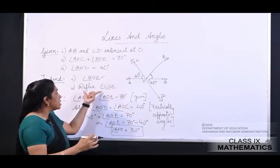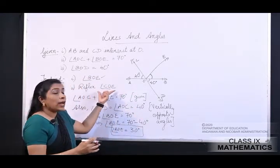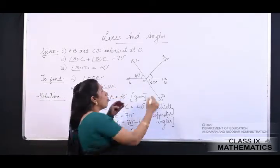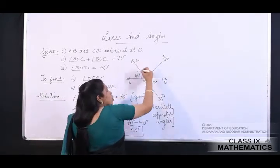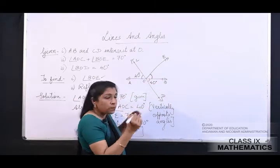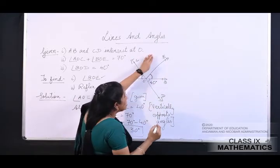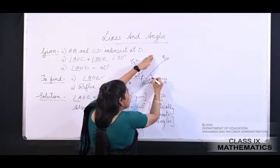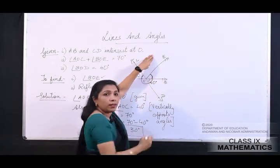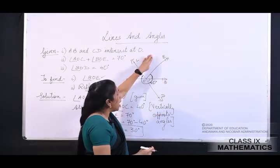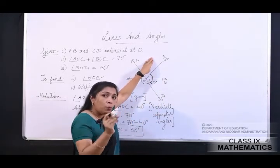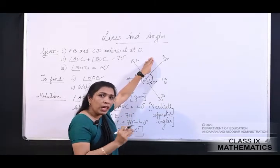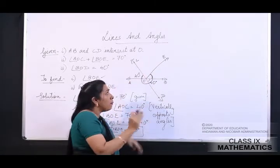Next is reflex angle COE. Reflex maane — is angle ko chhod kar baqi yahan se lekar yahan tak poora angle. I will tell you two methods to find the reflex of COE.